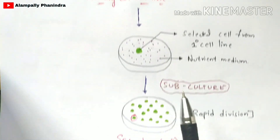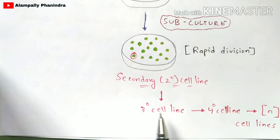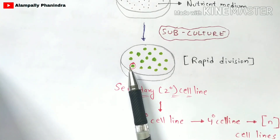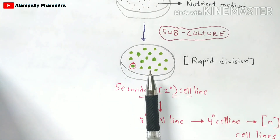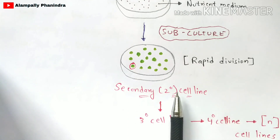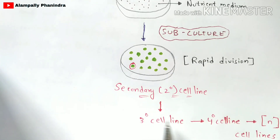So the primary cell line leads to the secondary cell line. You then repeat the process — select a desired cell from the secondary cell line, place it in a new petri plate with fresh nutrient medium, and incubate it. Cell division occurs to form the tertiary cell line, then the quaternary cell line, and in this way n-number of cell lines can be obtained. This is the method behind the formation of cell lines.